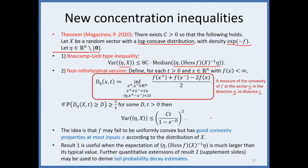This contrasts with the original Brascamp-Lieb inequality, which takes an expectation: even a small number of bad points can make the expectation infinite. Here, using the median or a high-probability condition avoids that issue. There are further extensions in supplementary slides that can give tail bounds, which I will not cover.